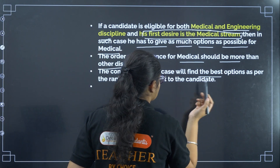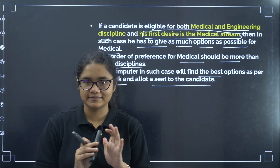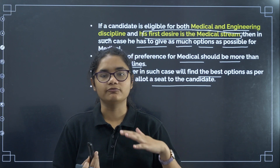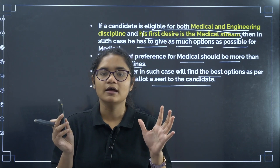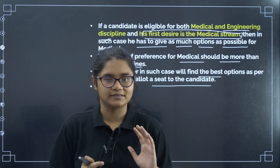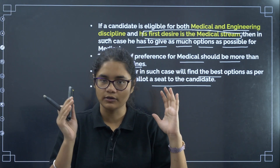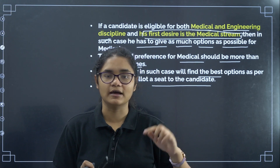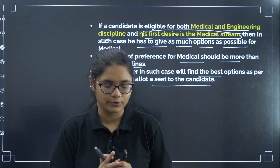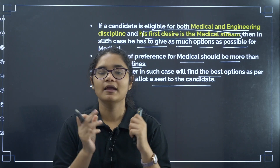The computer will find the best option as per the preferences and allot a seat to the candidate. To summarize: if you are eligible for more than one discipline, you have to fill preferences for all disciplines in the same entry form — there will be no separate counselling or separate option entry for different disciplines. Suppose you want medical, put medical first; then if you want engineering, put engineering. You can mix and match as per your preference order. All of this must be done right now in this round one option entry — there is no other option entry or chance given to you. So please check all courses, check all eligibility and opportunities, then start filling the option entry.